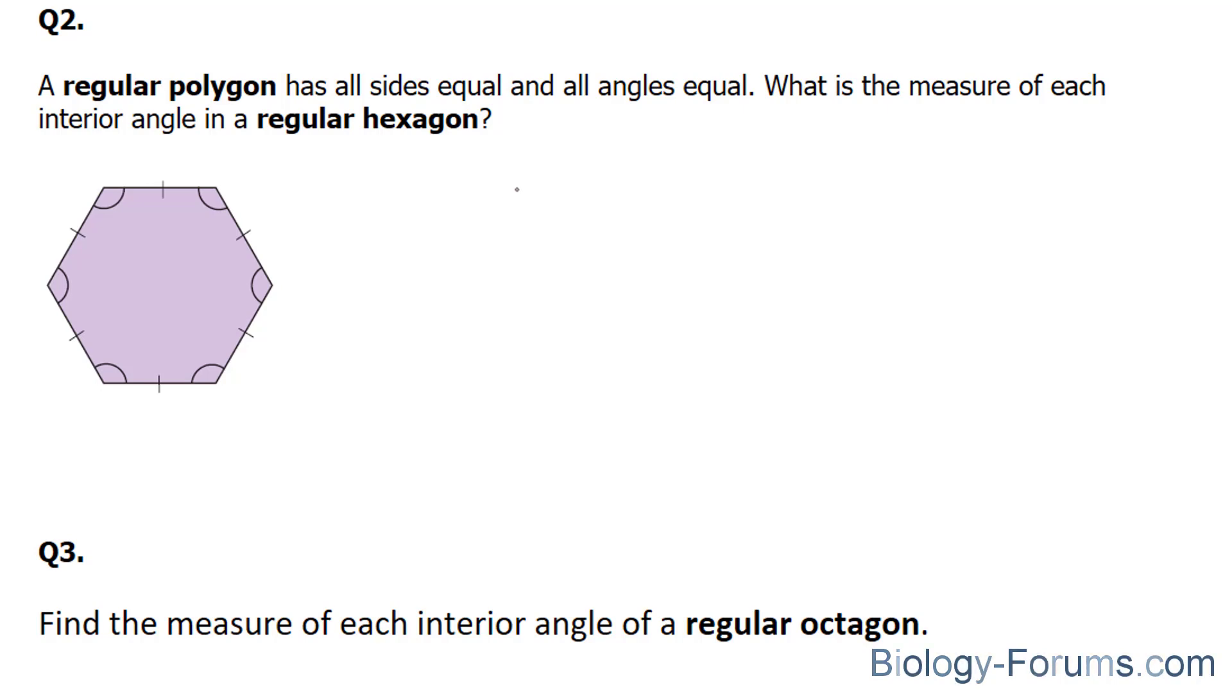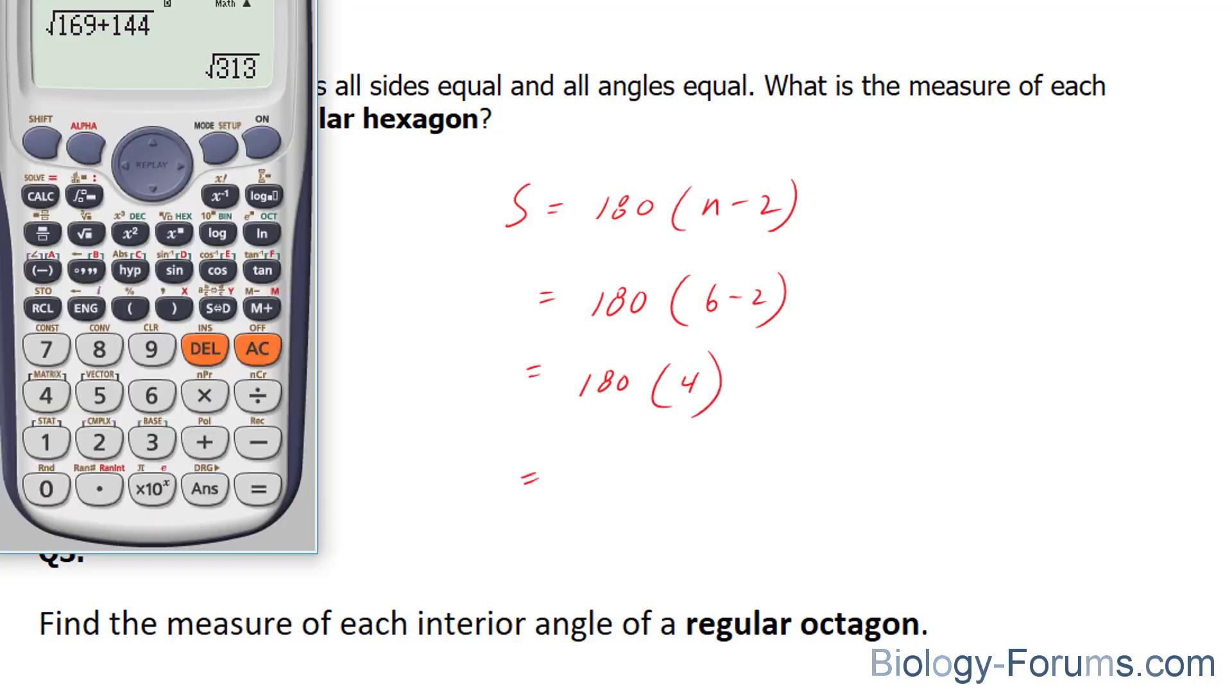So we're going to use the formula S is equal to 180 n minus 2. The hexagon consists of six sides. So it's 6 minus 2, 180 times 4, and the answer is 720.